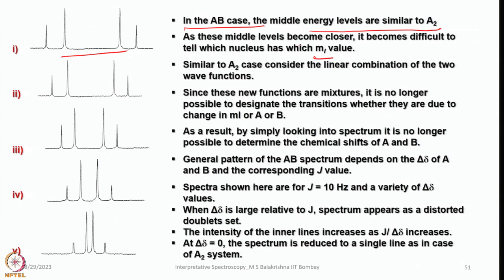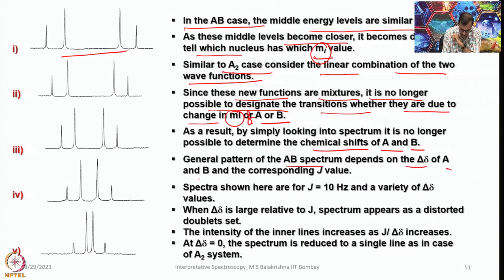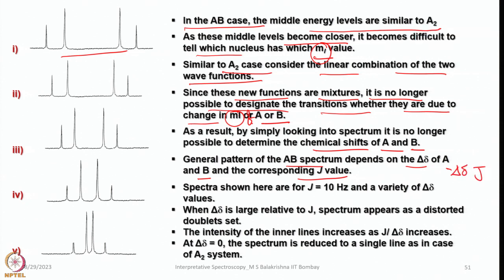As the middle energy levels become closer, it becomes difficult to tell which nucleus has which Mᵢ value — whether it has plus half or minus half. Similar to the A₂ case, consider the linear combination of two wave functions. Since these new functions are mixtures, it is no longer possible to designate the transitions as due to a change in Mᵢ of A or B. As a result, by simply looking at the spectrum, it is no longer possible to determine the chemical shifts of A and B. The general pattern of the AB spectrum depends on δA, δB, and the corresponding J value — to what extent delta-delta is comparable to J.